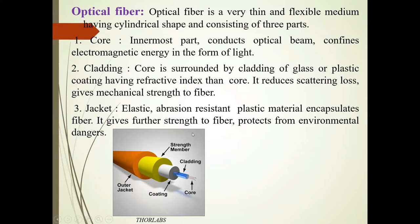The core is the most central part — it conducts the optical beam and confines electromagnetic energy in the form of light. The second part is cladding. The core is surrounded by cladding of glass or plastic having a refractive index greater than that of the core. It reduces scattering loss and provides mechanical strength to the fibre.